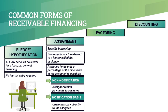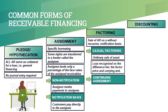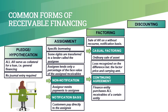Factoring is the sale of accounts receivable. Since ownership of the receivables has transferred to the factor, the factor assumes all the risks and has no recourse should the receivables become uncollectible. Customers are normally informed of the factoring. There are two forms of factoring: cash flow factoring and factoring as continuing agreement. Cash flow factoring is a one-time sale transaction that results in a loss, whereas continuing agreement is a recurring and ongoing purchase by a finance entity of all the accounts receivable, both current and future, of a certain entity.